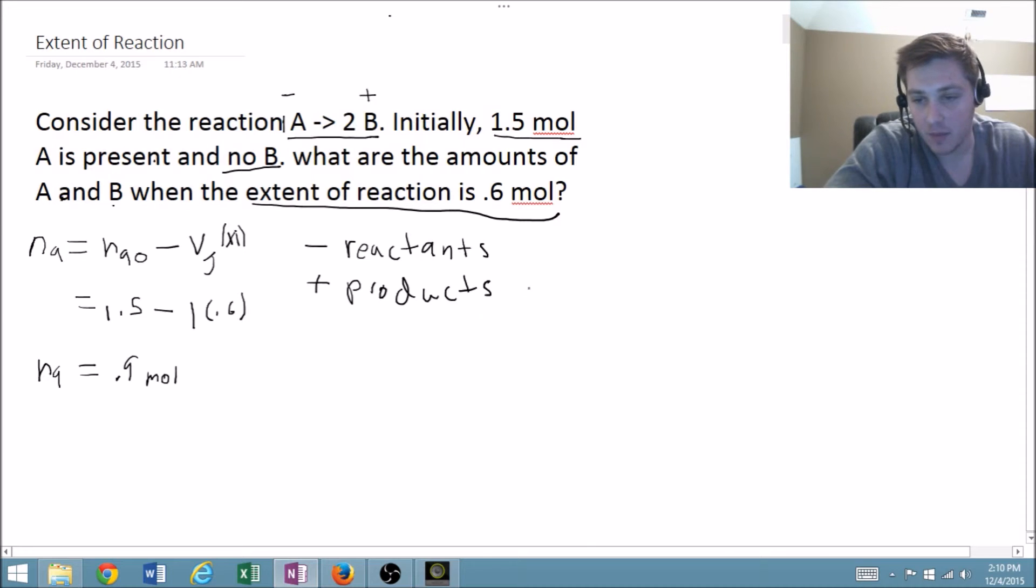We can do this same formula for B. But we need to remember that this is B initial. We are adding. The other thing to note here is that our stoichiometric coefficient for B is 2. So we're going to have 2 times 0.6.